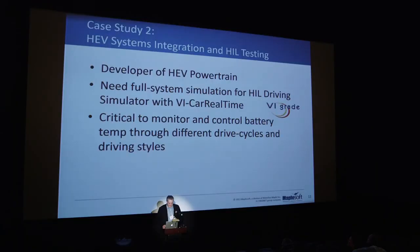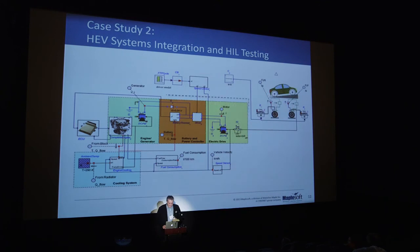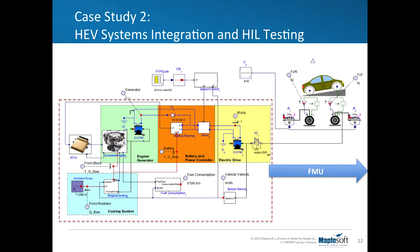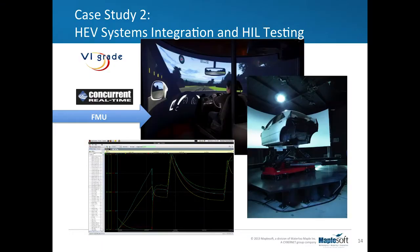The second case study involves VI Grade and Concurrent, who supply the real-time platform for driving simulators. We had developed a dedicated code export connected to VI Grade VI-Car Real-Time, but Concurrent approached us and asked if we could try doing this with FMI. So they developed an FMI interface, we sent them a model — a very complex HEV system model. A week later they said 'would you like some benchmarks?' It just went straight in. There was no back and forth between our developers and theirs. We implemented something very quickly within their Concurrent interface, and it's now being used within VI Grade VI-Car Real-Time as part of the driving simulator.